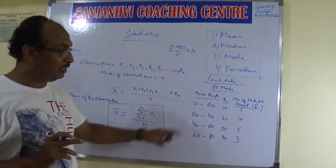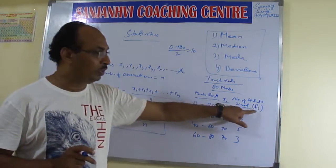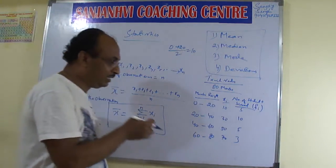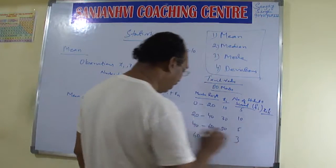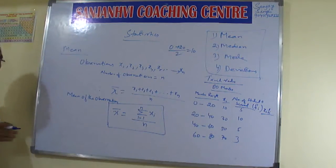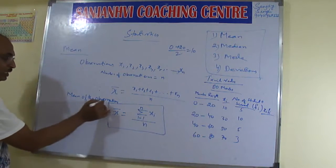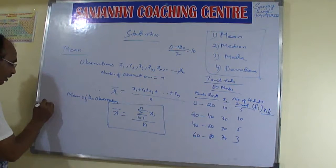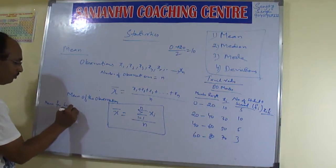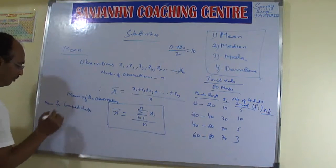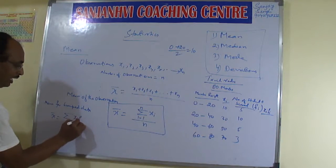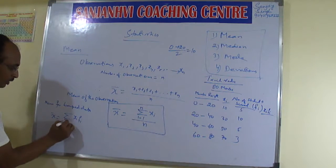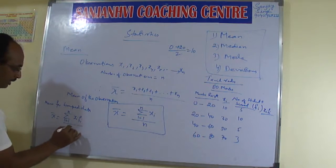Now in this grouped data you need to find out Xi and Fi. For this grouped data the formula will get changed. When direct observations are there — one formula. But when finding mean for grouped data: mean = (Σ XiFi from i=1 to n) / (Σ Fi from i=1 to n).